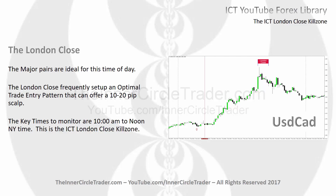The London Close is a particular time of day that usually ends the opposite end of the daily range. The major pairs usually coupled with the dollar are ideal for this time of day, and the London Close frequently sets up an optimal trade entry pattern that can offer 10 to 20 pips for a scalp. The key times to monitor are 10 a.m. to noon New York time — this is the ICT London Close Kill Zone.